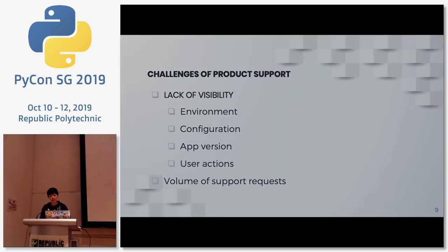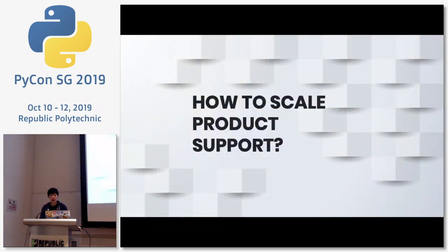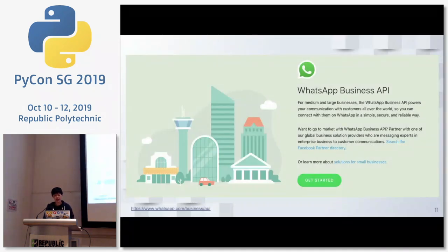So how do we scale product support? I want to start with what we did at WhatsApp. First, I want to introduce the product that inspired this project. WhatsApp Business API was launched last August and is still in closed beta. Basically, it is an API that allows businesses to send and receive messages — to communicate with their customers using WhatsApp at scale.